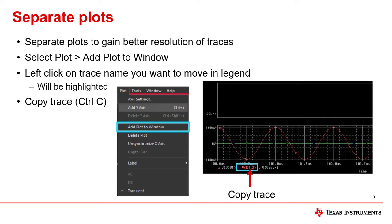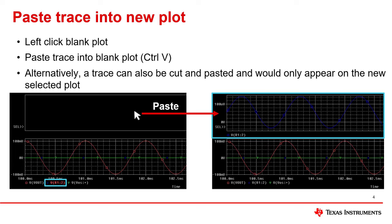Plots can be separated in order to have a higher resolution of differently scaled traces. To separate plots, navigate from the Plot toolbar to Add Plot to Window. Next, left-click on the trace name in the legend and copy the trace. Now, left-click the blank plot and paste the trace. The trace will now be present in both plots; however, note the different scales on the graph.